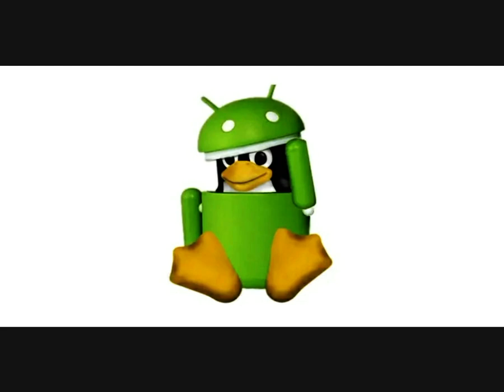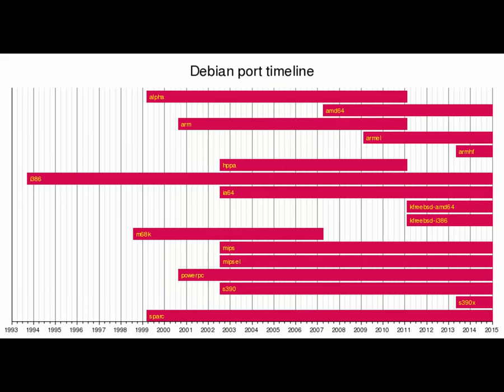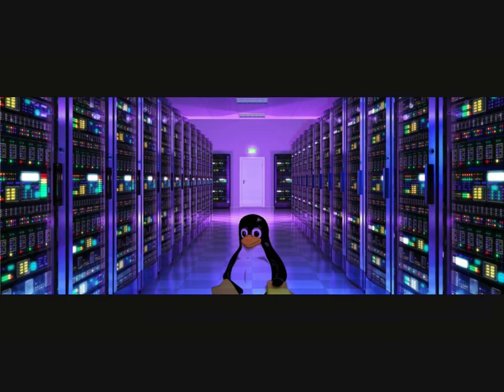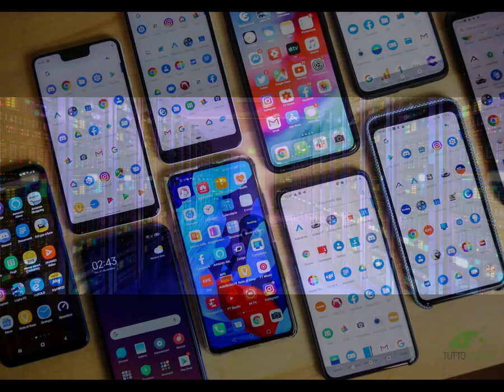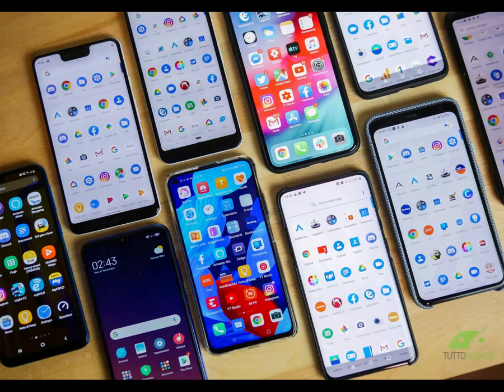This is a substantial difference between systems based on the Linux kernel, but here are five other no less important differences. 1. GNU Linux supports many more architectures and its audience is more oriented towards the use of servers and desktops. Embedded Linux systems are popular on smartphones, tablets, and smart TVs.